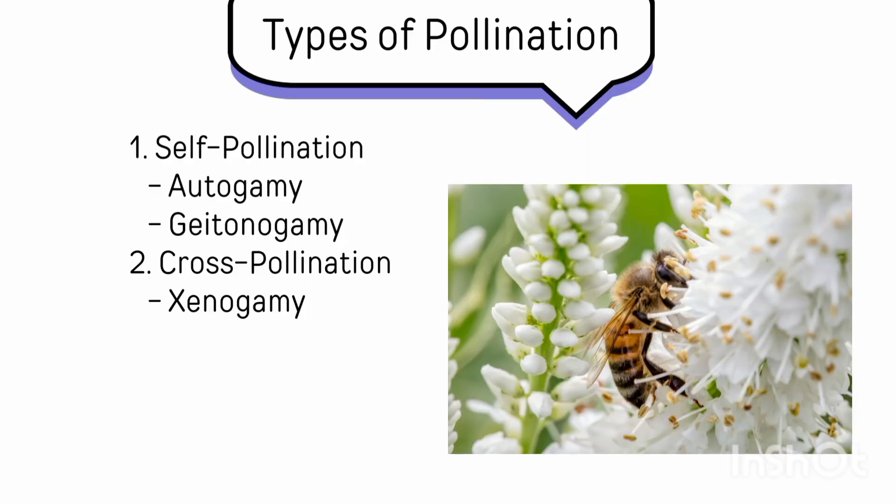Let's start with types of pollination. There are two types of pollination: self-pollination and cross-pollination.